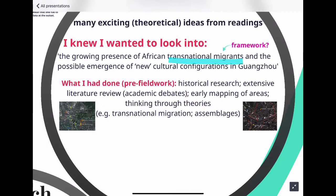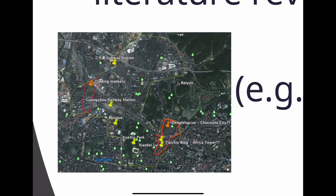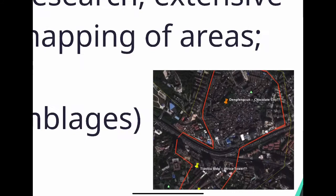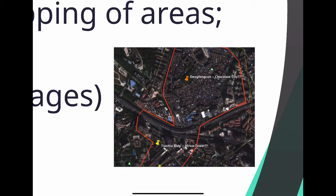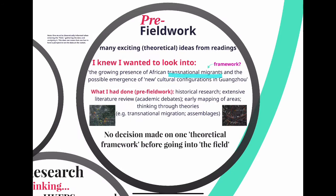These were early mappings I did. I went to a section of Guangzhou and walked around, deciding this was the area where I was going to focus. In particular, I identified a neighborhood in Xiaobei Lu in Guangzhou, which some people used to call 'Little Africa' or 'Chocolate City.' At that point, I had made no real decision on the theoretical framework — I was unsure whether to make a theoretical decision before going into the field.